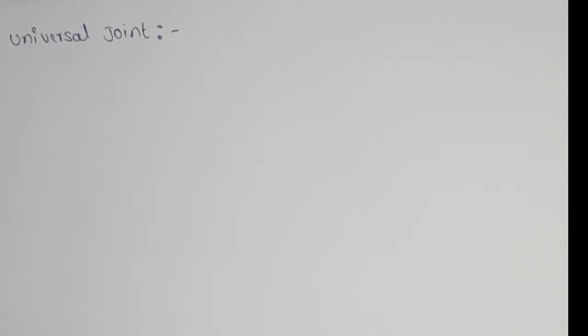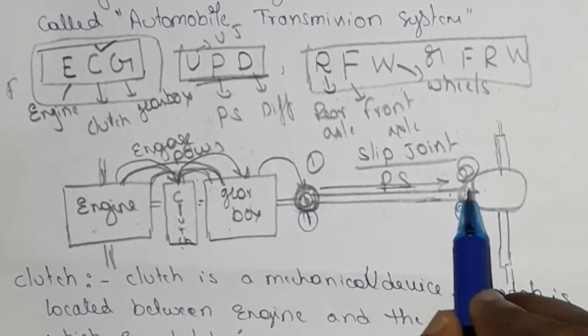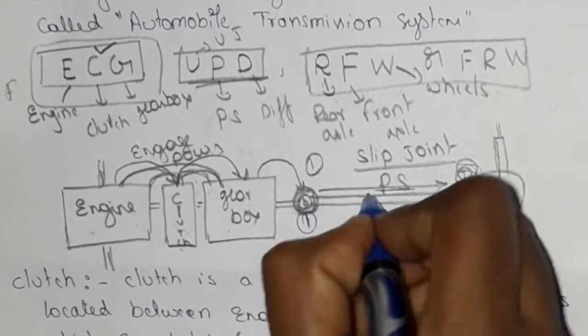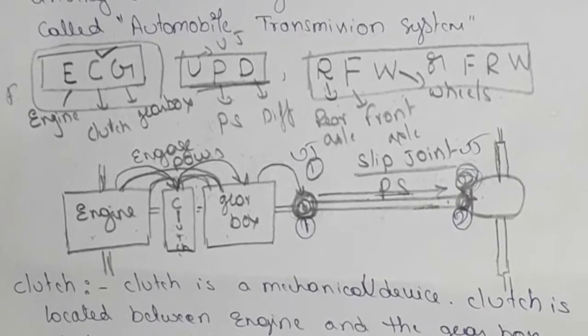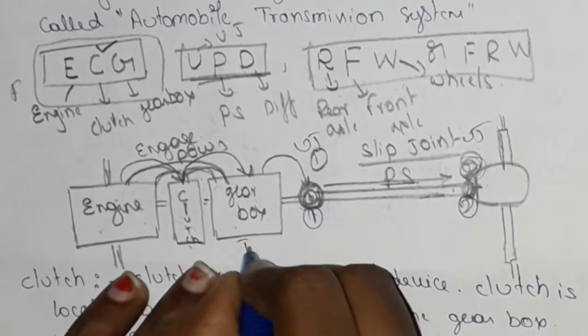The universal joint is a flexible connection between two rigid shafts at an angle. We have two rigid shafts connected by a flexible connection. Here we have two universal joints: the first one at the propeller shaft's first end and the second one at the propeller shaft's second end.